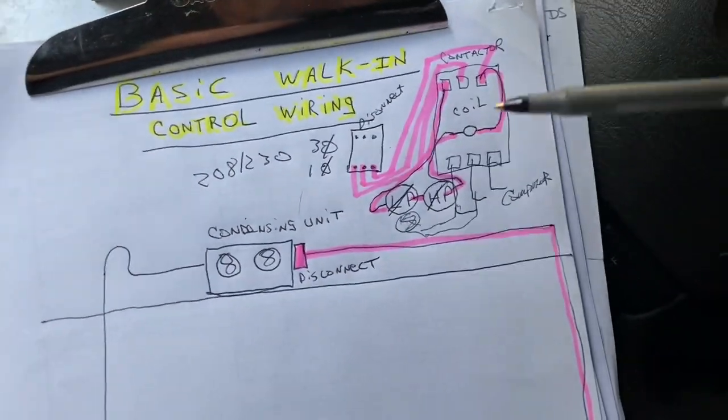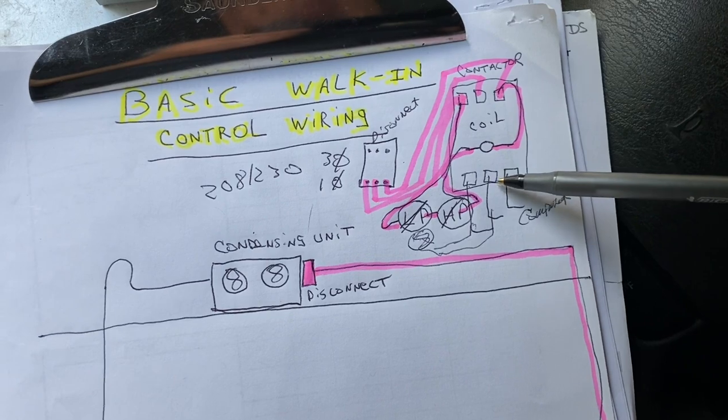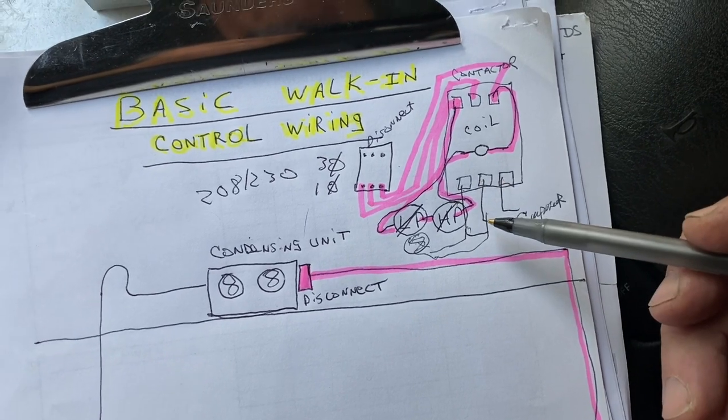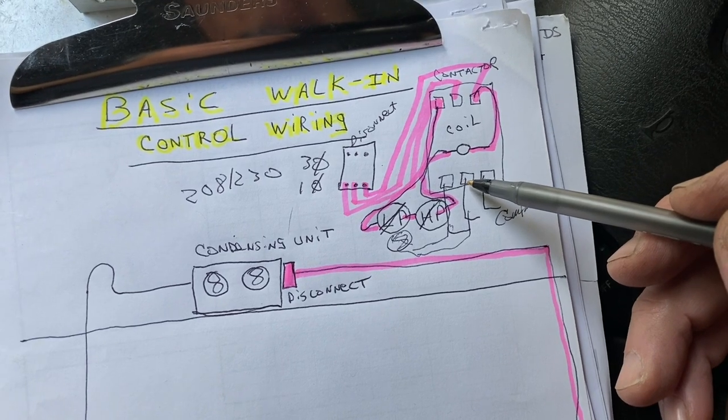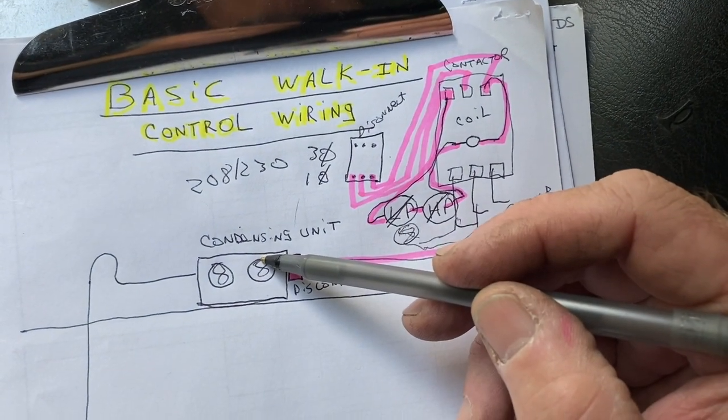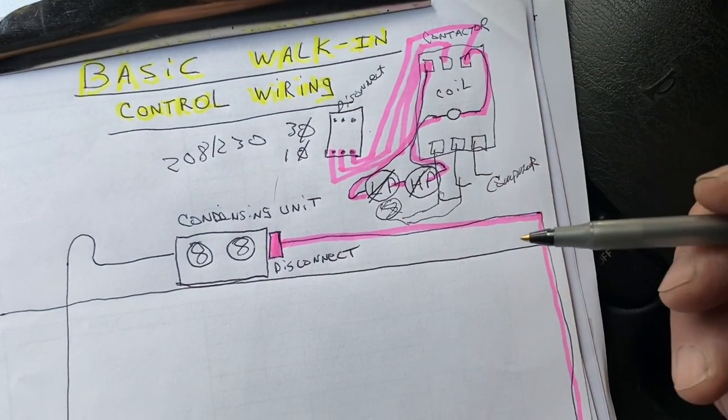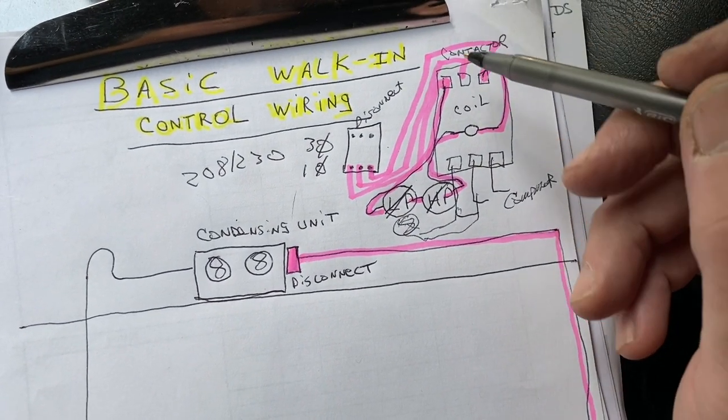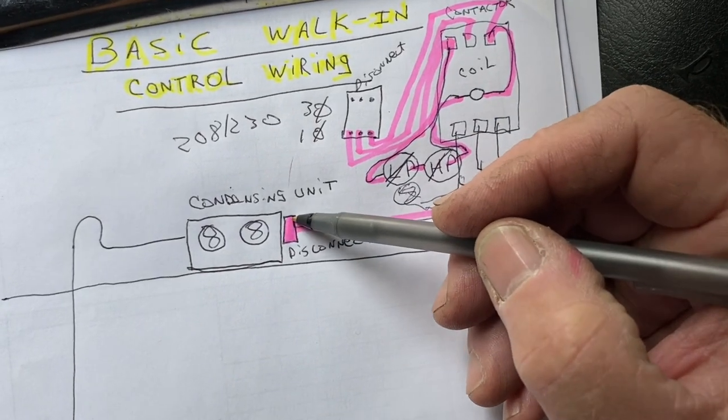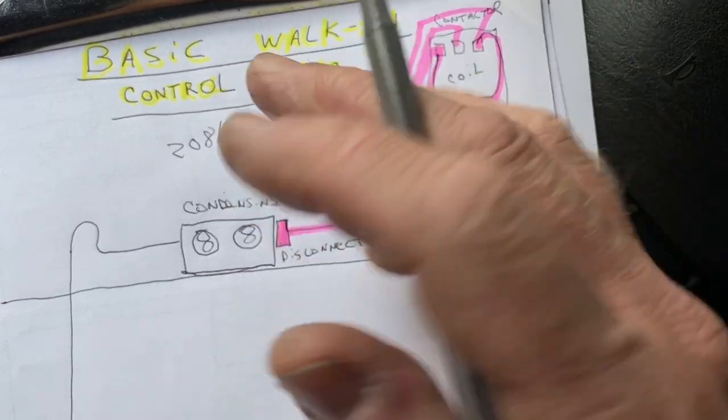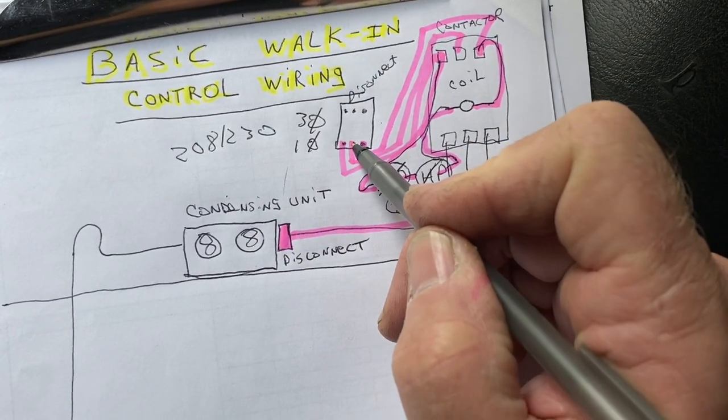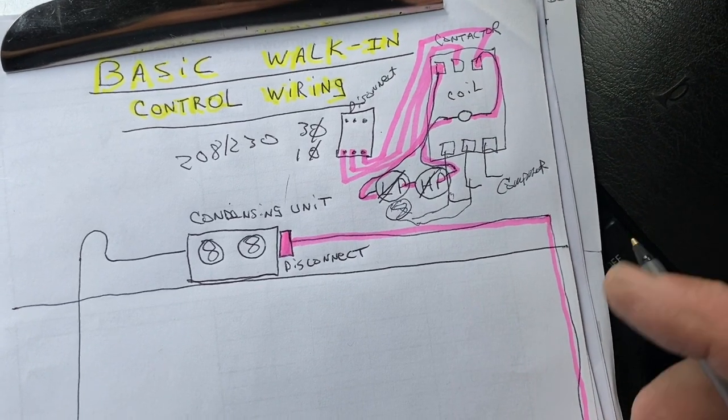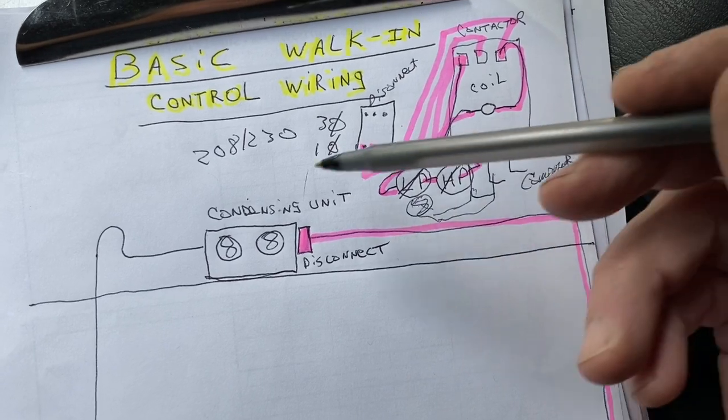One last thing to go over. If you have three phase and you have a scroll compressor in here, the scroll compressor is phase sensitive. It has to spin the right direction to pump. You'll have your gauges on it. You can listen to it. If your pressures are staying the same and it's running and your suction pressure is not dropping on your gauge, to correct that problem, shut off your disconnect and change any two wires. Just flip flop. You can take this one, put it here, take this one, put it here. And then that will get your rotation reversed for your compressor to run the right direction. If you have a scroll, on a recip, it doesn't matter which way it goes.